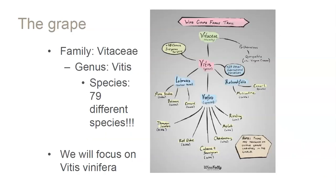The family that grapevines fall within is the Vitaceae. The genus is Vitis, which you can break into two subgenera: Vitis and Muscadinia. Within Muscadinia, you have Muscadinia rotundifolia. It used to be written as Vitis rotundifolia, but the way it's written now is Muscadinia rotundifolia.